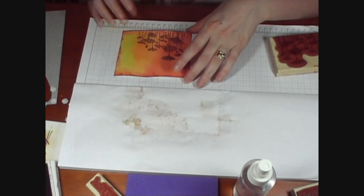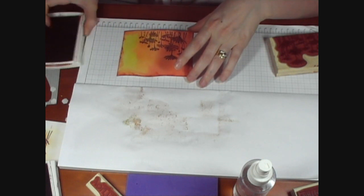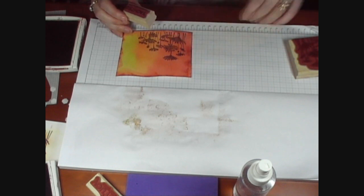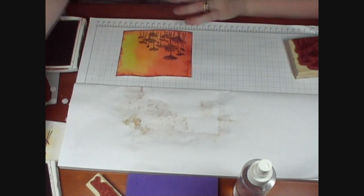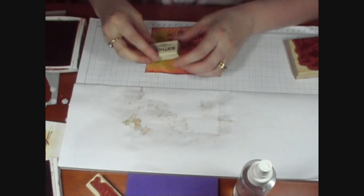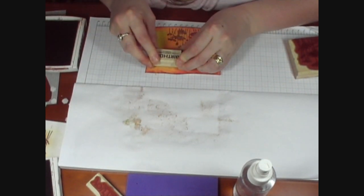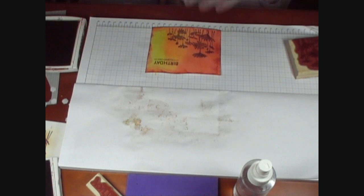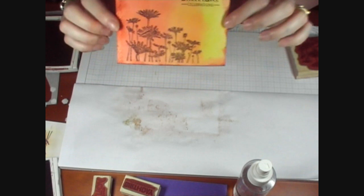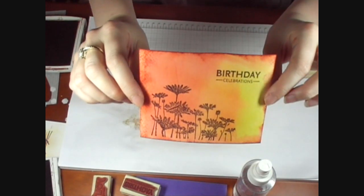Then we can stamp the sentiment onto it. That's got a couple of nice ones. We might use the birthday one, I think. And just once again in the brown ink. I'm just going to pop that up in the corner. So I've got little birthday celebrations there.